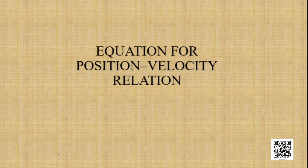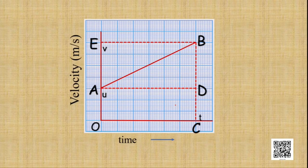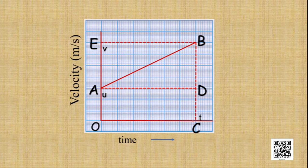Now we will go for the third equation — the relation between position and velocity. To find out this relation, we use the same velocity-time graph. The distance traveled by the object is S in time T under uniform acceleration A, and it is given by the area of the trapezium OABC.